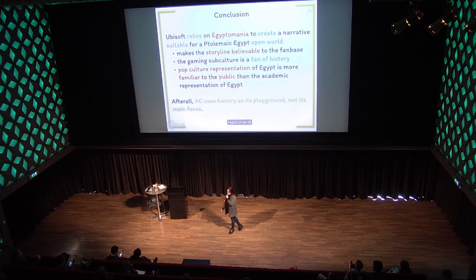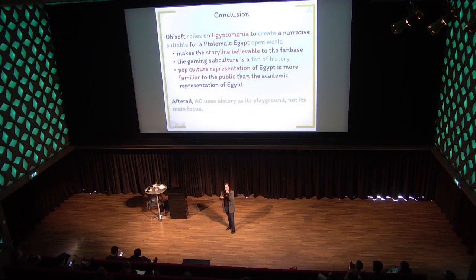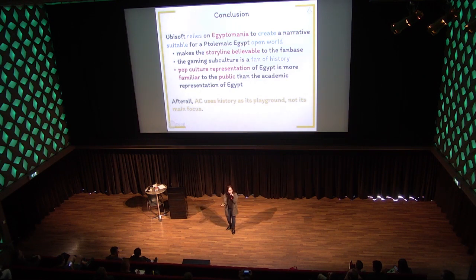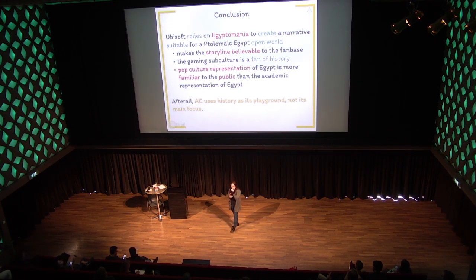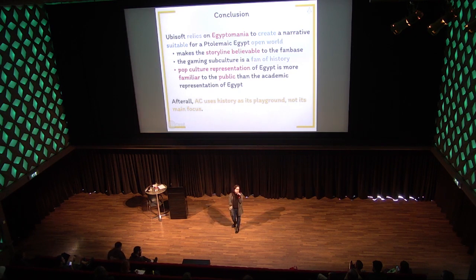In conclusion, Ubisoft relies on Egyptomania to create a narrative suitable for a Ptolemaic Egypt open world. It's meant to make the storyline believable and relatable to an audience more familiar with pop culture representations of Egypt than academic ones. Bear in mind, Assassin's Creed's tagline is that history is our playground — so they are using history as a playground rather than a main focus. Thank you.